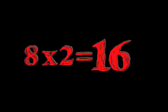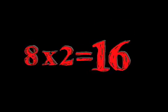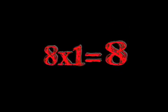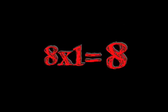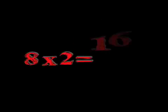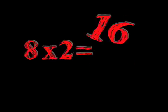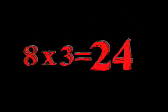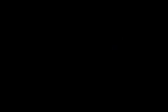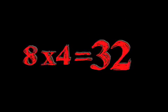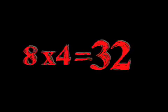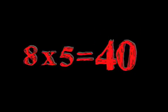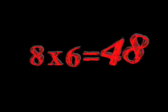Eight times two is sixteen. Eight times one is eight. Eight times two is sixteen. Eight times three is twenty-four. Eight times four is thirty-two. Eight times five is forty. Eight times six is forty-eight.